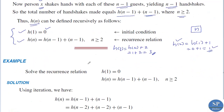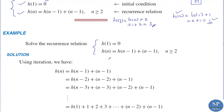Next, solve the recurrence relation h(1) = 0, h(n) = h(n-1) + (n-1) for n ≥ 2. We apply the relation iteratively: h(n) = h(n-1) + (n-1). Replacing n with n-1: h(n-1) = h(n-2) + (n-2). Substituting back: h(n) = h(n-2) + (n-2) + (n-1). Then replacing h(n-2) = h(n-3) + (n-3), we get h(n) = h(n-3) + (n-3) + (n-2) + (n-1).